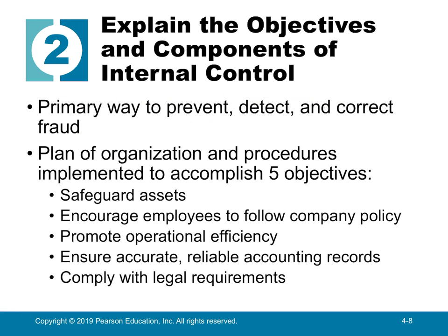Internal controls are the primary way to prevent, detect, and correct fraud. They can be all sorts of things — for example, at Best Buy, there's usually an employee at the front of the store checking receipts. That prevents customers from walking out without paying and can also detect if an employee is working improperly with a customer. Internal controls also include things like passwords to get into a computer.